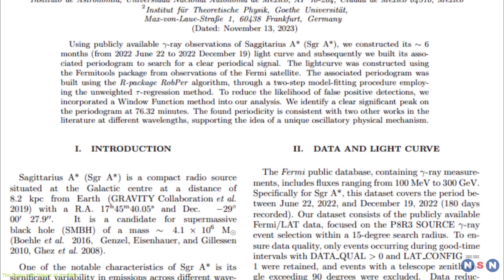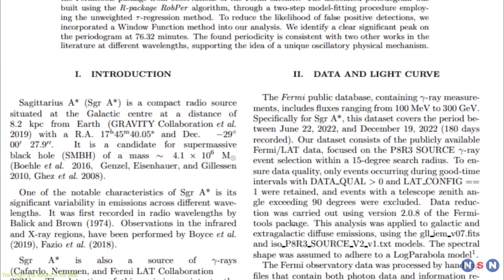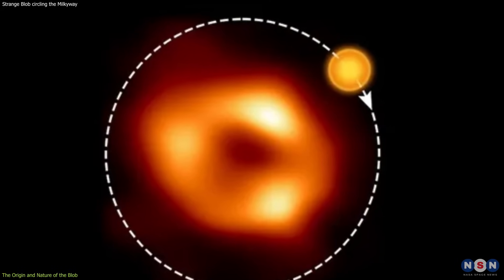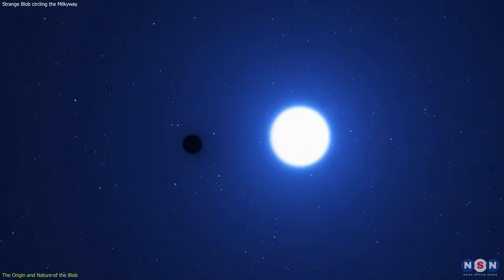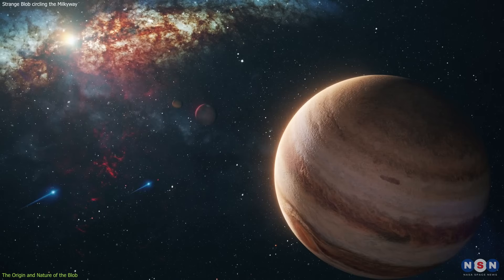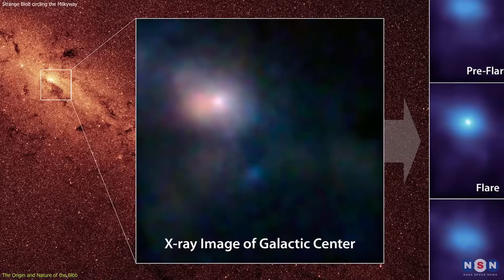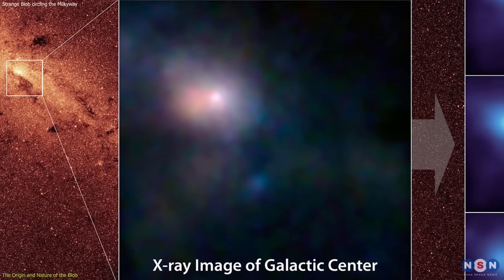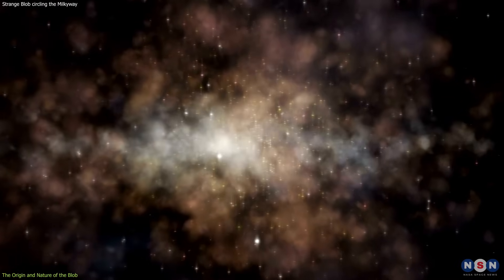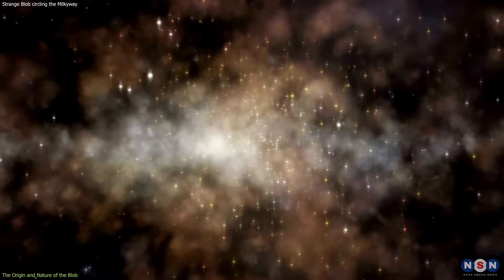they came up with a possible explanation for the origin and nature of the gamma ray source. They concluded that the source is a blob of gas that is orbiting the black hole at a very high speed and a very close distance. The blob is about the size of Jupiter, and it is very hot, with a temperature of about 10 million degrees Celsius, which is almost as hot as the core of the Sun. It is made of mostly hydrogen and helium, with some traces of other elements, such as iron and silicon.